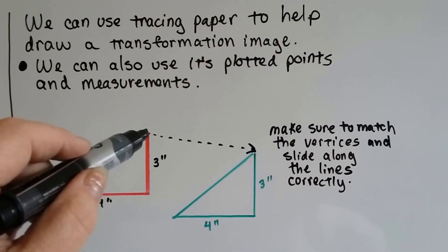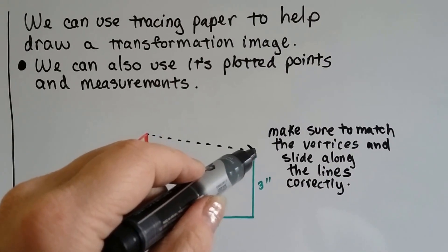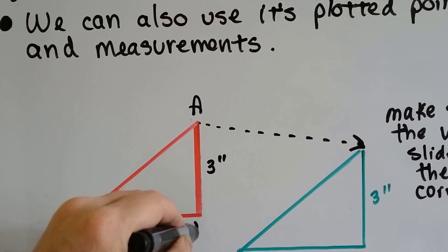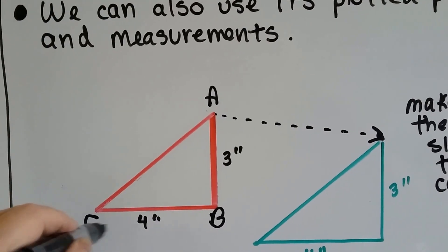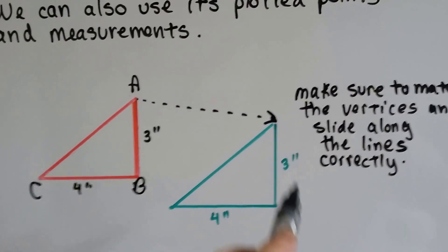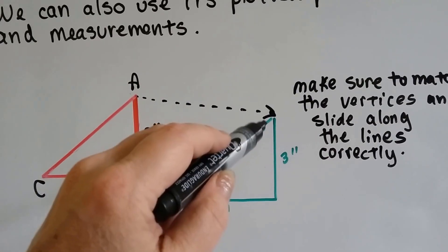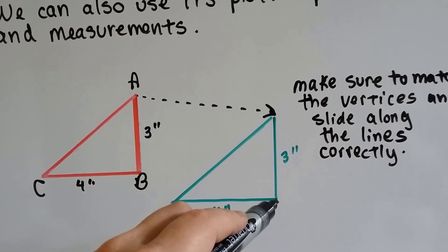Or we could say, alright, well, this is the point, and this is going to be the exact same point. So if this was triangle ABC, and it was going to match this one with ABC, and we knew that AB was 3 inches, we could, from this point, we could draw a 3-inch line.